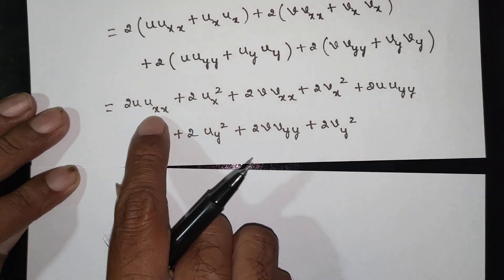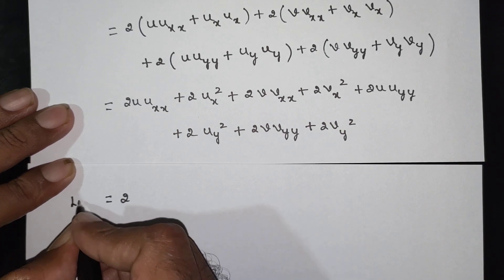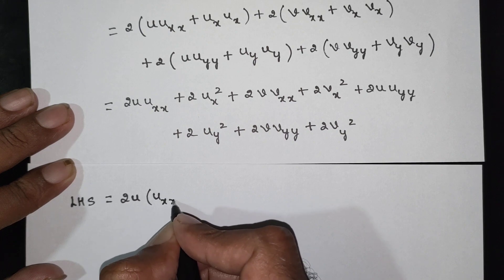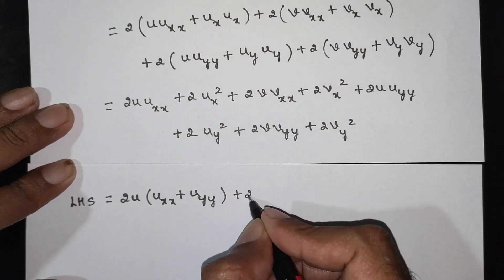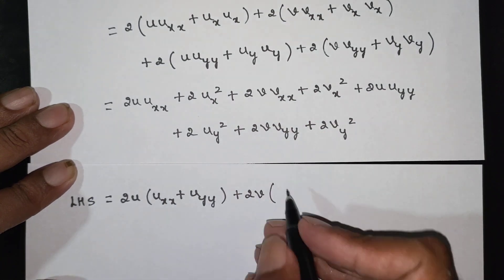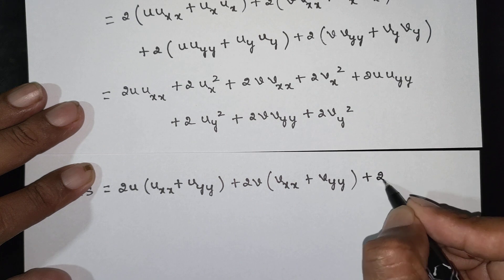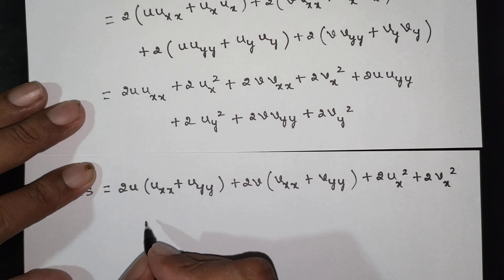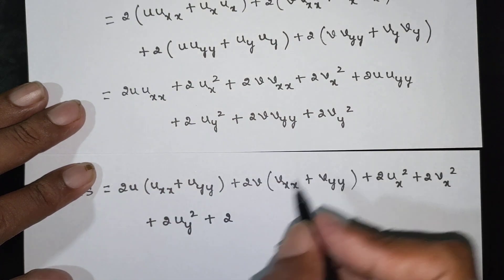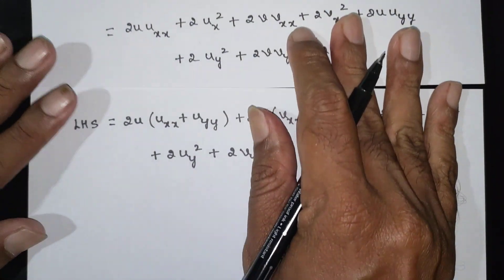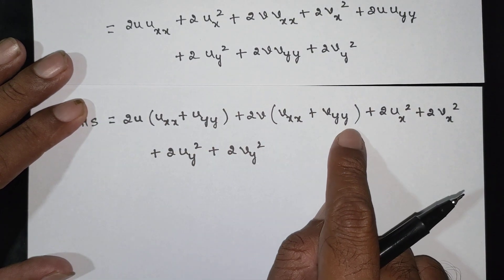We can group these terms. Here uxx and uyy appear together, and vxx and vyy appear together. So LHS = 2u(uxx + uyy) + 2v(vxx + vyy) + 2ux² + 2vx² + 2uy² + 2vy². Since u and v are harmonic functions of an analytic function, uxx + uyy = 0.